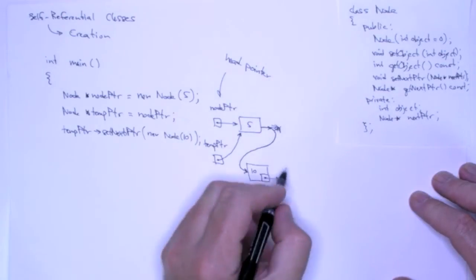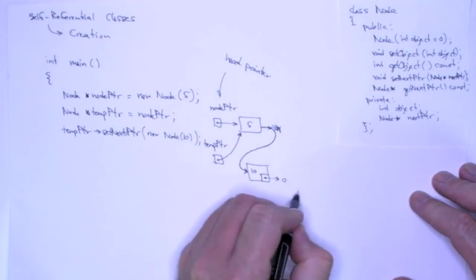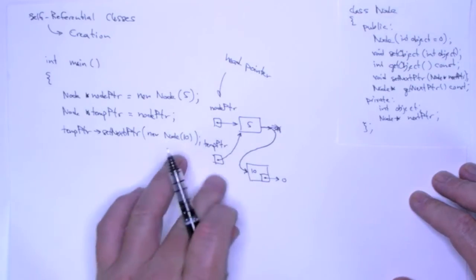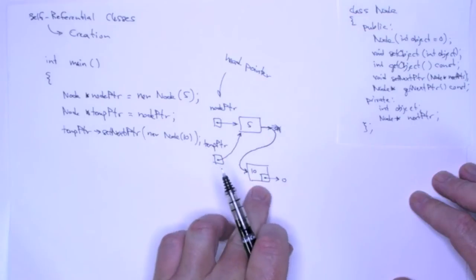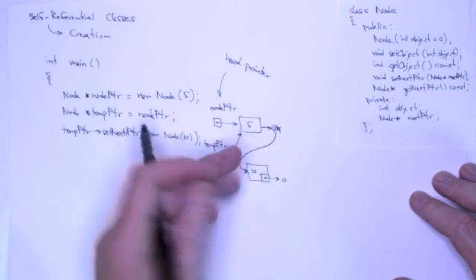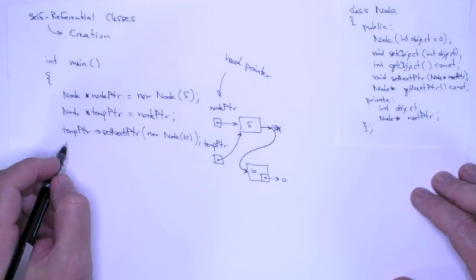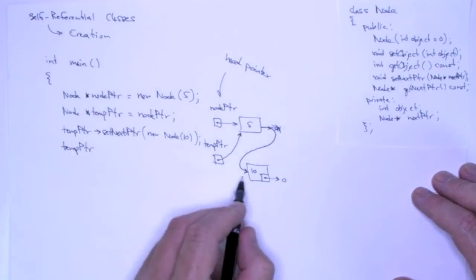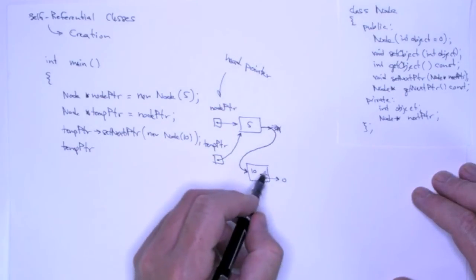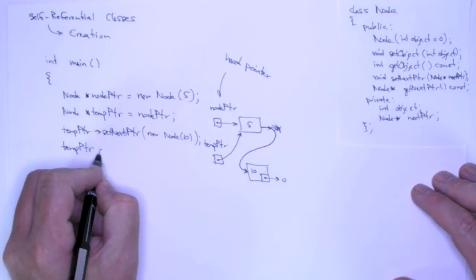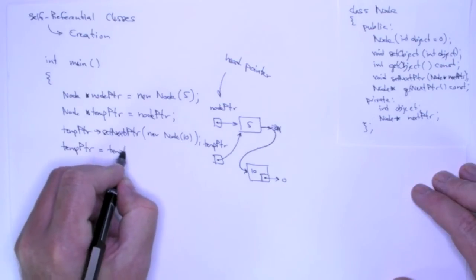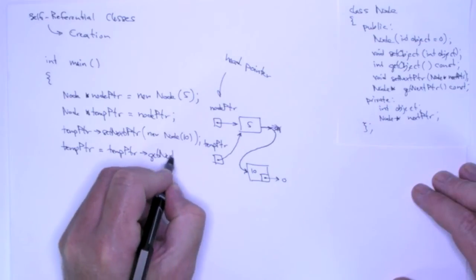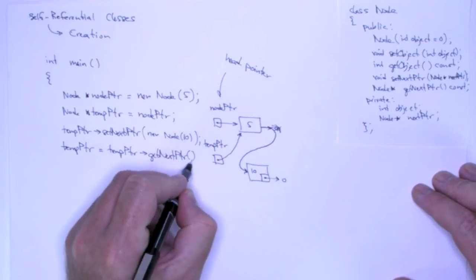Now, to set up, I'm going to add another node here at this end, and to set that up, I need to advance temp pointer. So, you can see that temp pointer is always pointing to the last element of the list, even if the list only has one element. So, to advance temp pointer, I need to set it to the address of this node, so I can say temp pointer get next pointer, just like that.